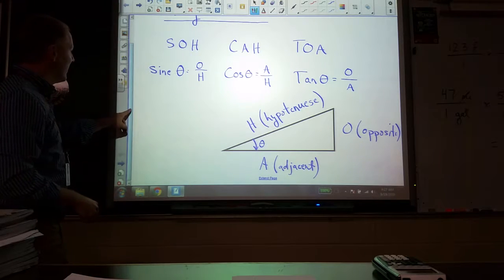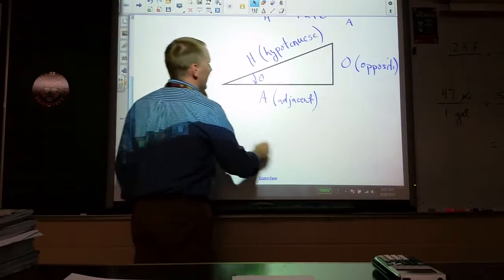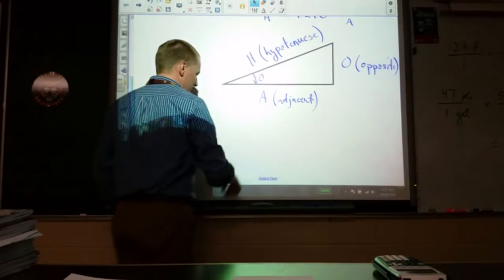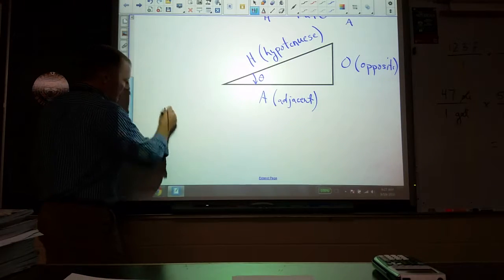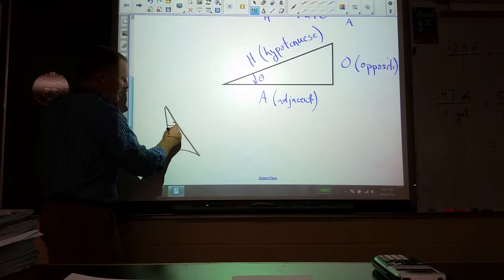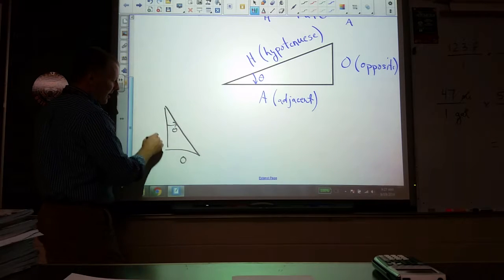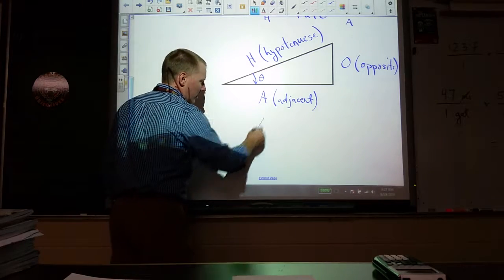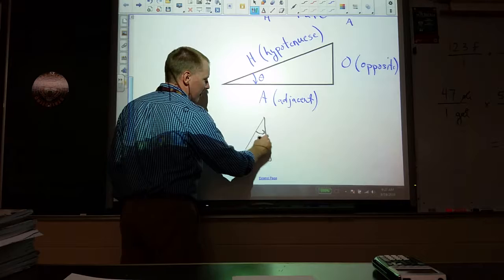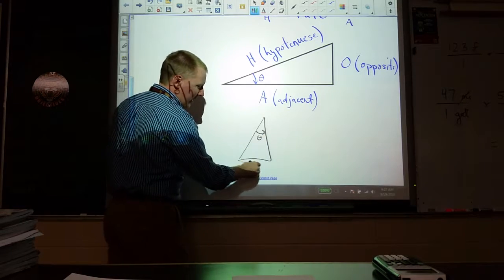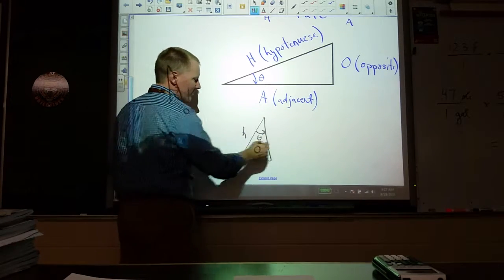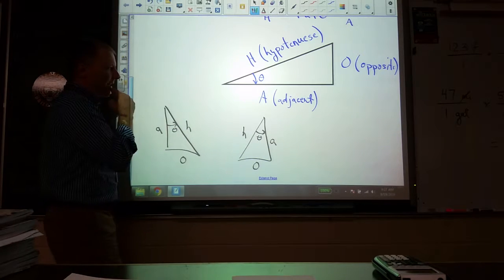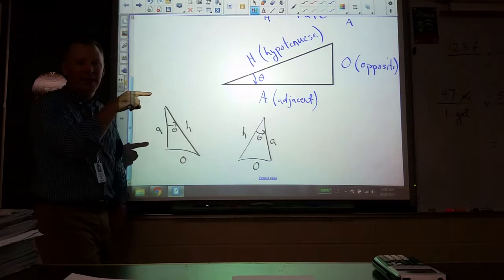Now we might even rotate this triangle in any different way. If we had a triangle like so and we knew this angle, that makes this the opposite side, this the adjacent side, and hypotenuse is easy. Or if we know this angle, it's opposite that. Hypotenuse is the easy one, and adjacent is always right next to it. So it doesn't matter how this is organized. We always reference it off of the angle.